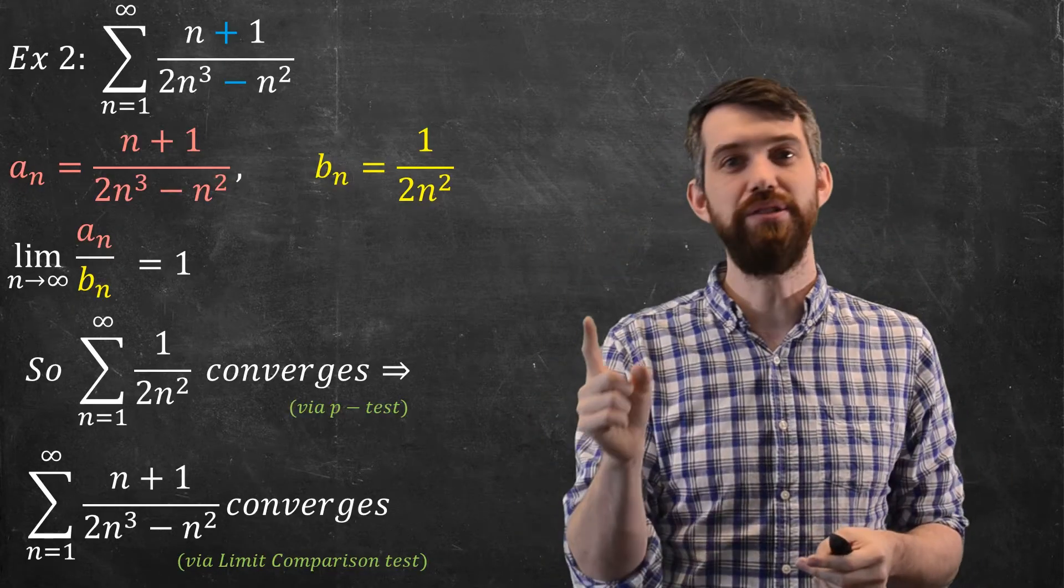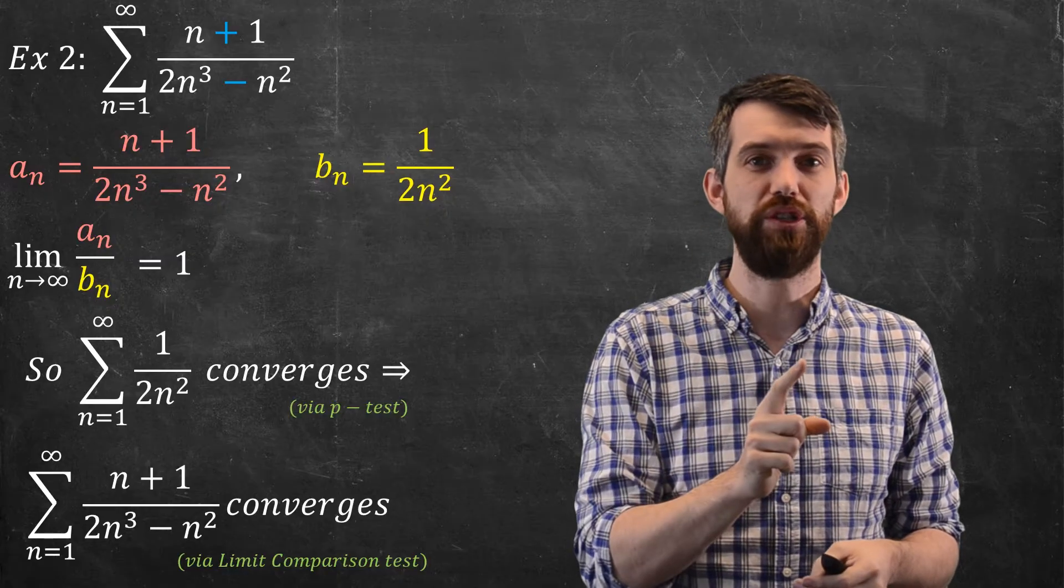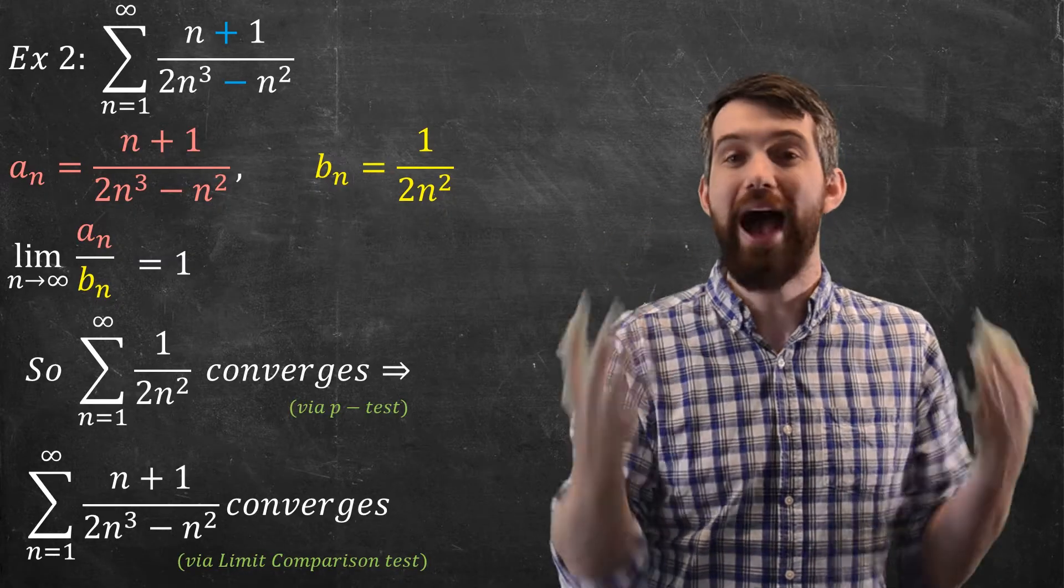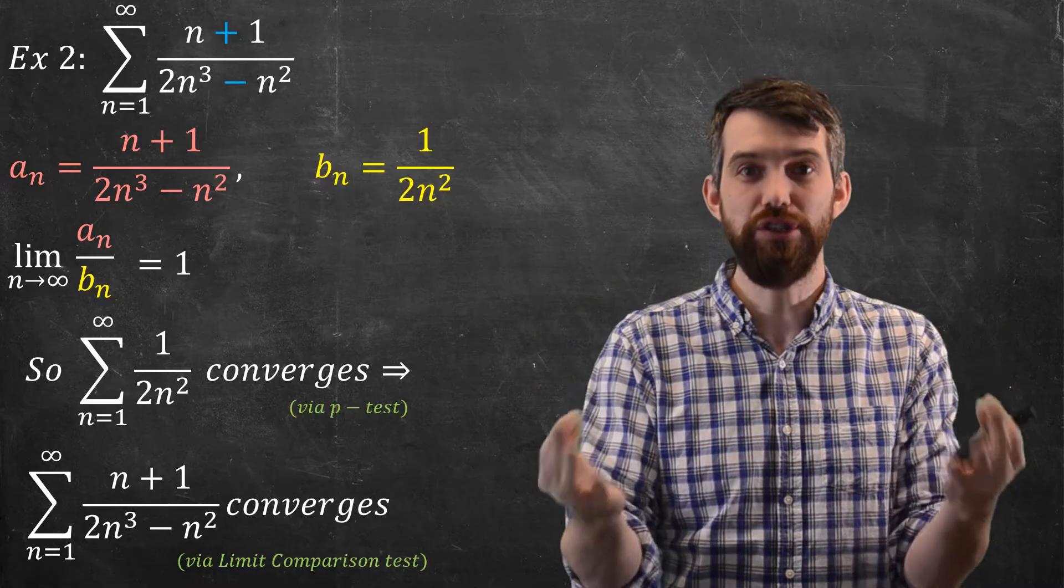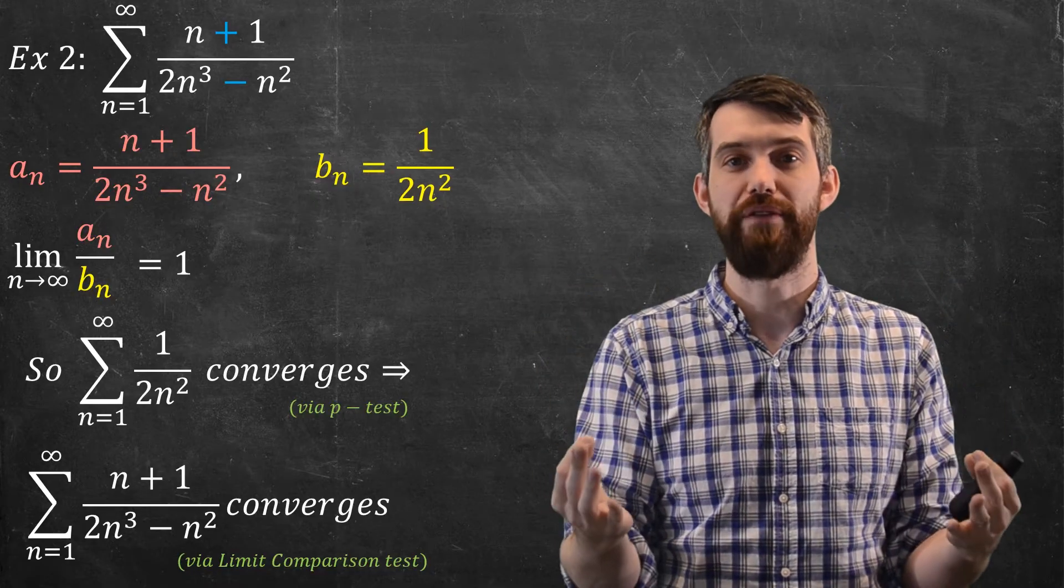and you compare it to that, and if the limit is a finite number that's greater than zero, then you have it. You have the comparison such that the convergences are going to be the same. They either both converge or they both diverge.